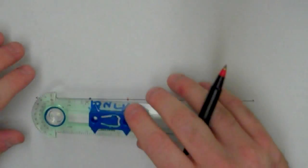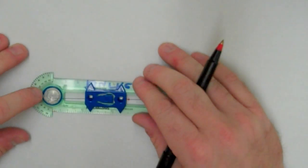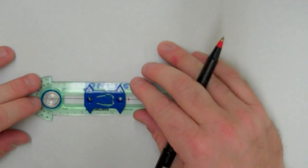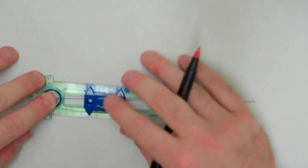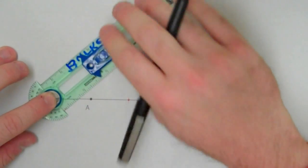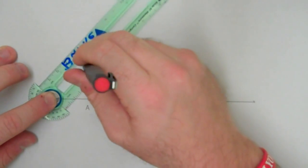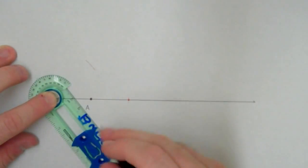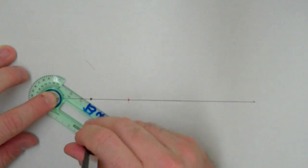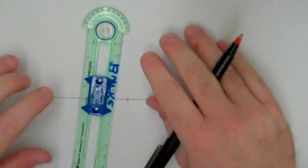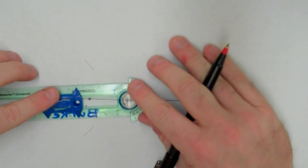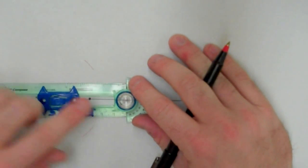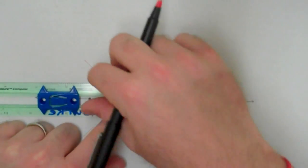So now I just do my perpendicular bisector construction. Put the point of my compass on one endpoint, open up my compass more than halfway, make a mark above, make a mark below, turn my compass around, and make the same two marks.